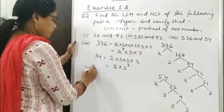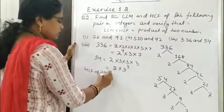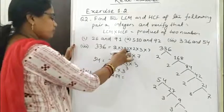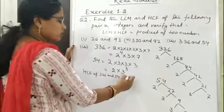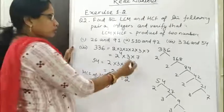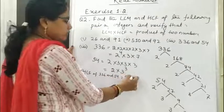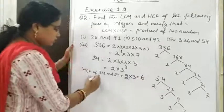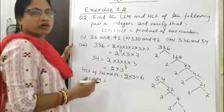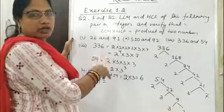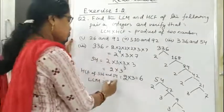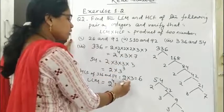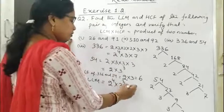So HCF of 336 and 54: both have 2 — we take the lowest power, 2¹. Both have 3 — we take the lowest power, 3¹. So HCF = 2 × 3 = 6. For LCM, we take the highest powers: 2⁴ × 3³ × 7.